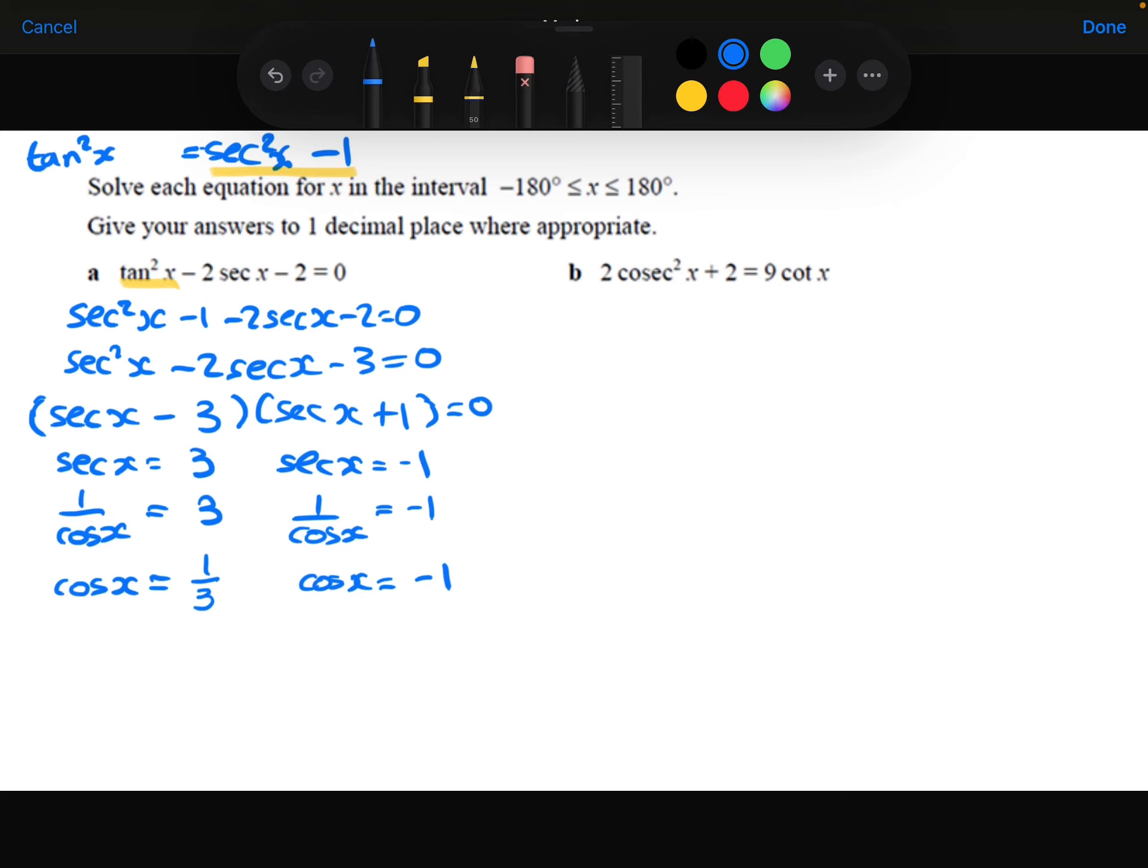Now we can do cos inverse of each of those and use our graph. So cos inverse of 1 third is 70.5 degrees to one decimal place.